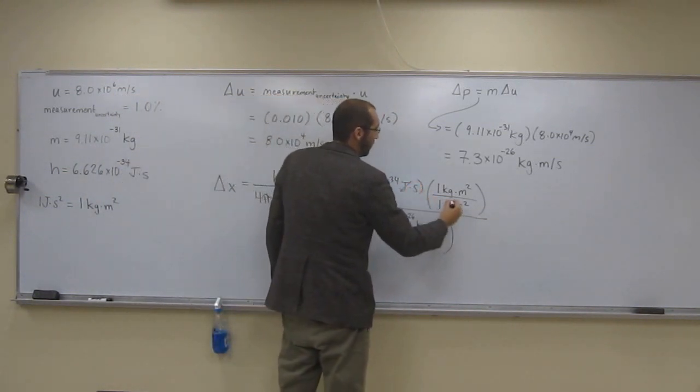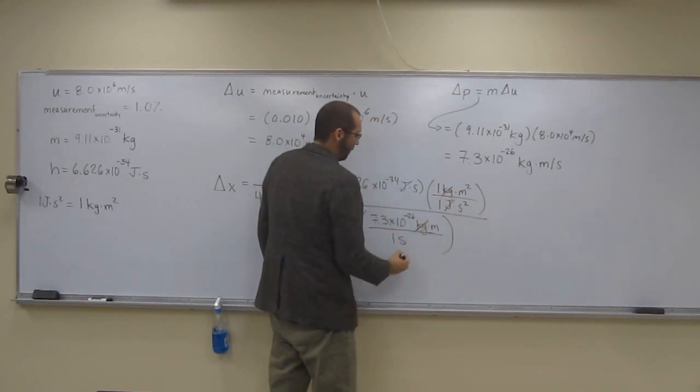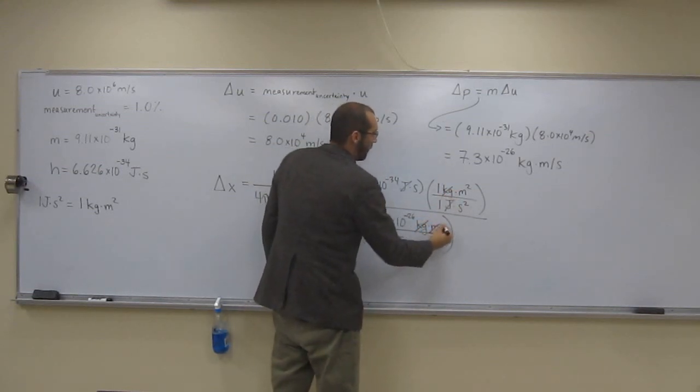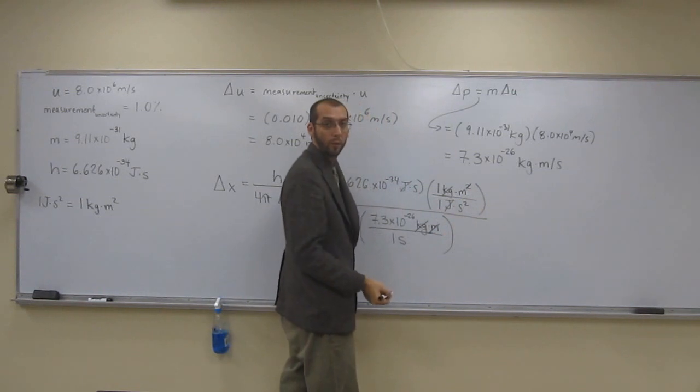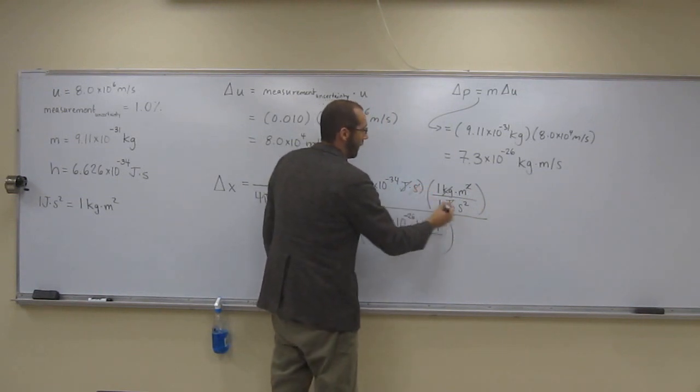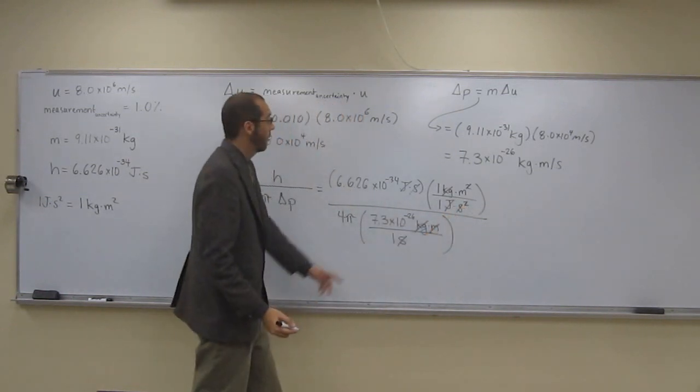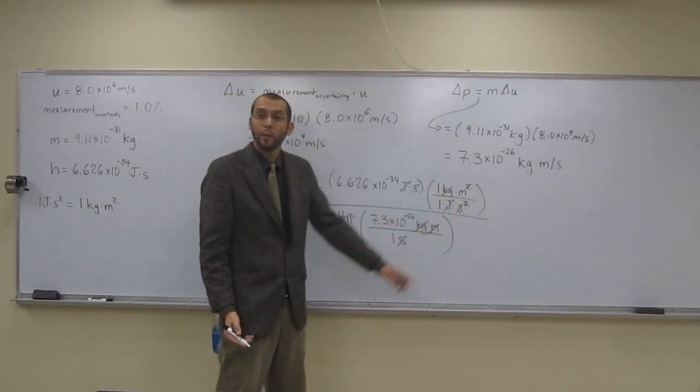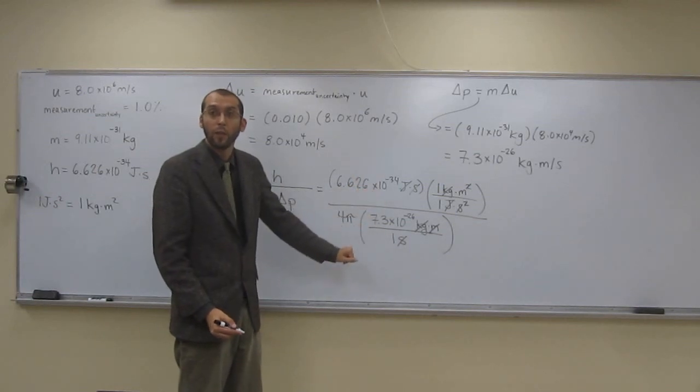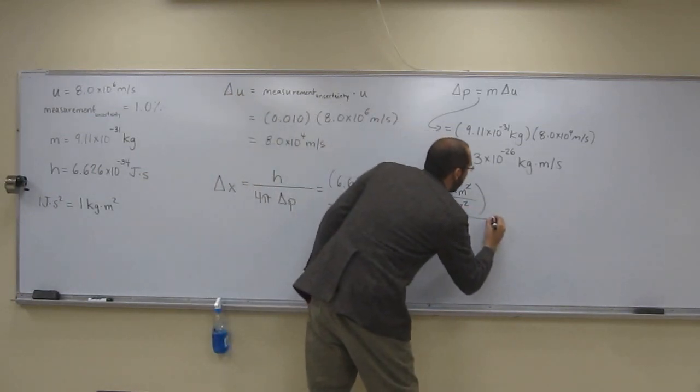So we cancel joules, joules. Kilograms, kilograms. Meters and one of the two meters. Seconds and one of the two seconds, and then seconds and the other second. What are we left with? Just meters. And those are good length units. So now it's just a matter of doing the plug and chug.